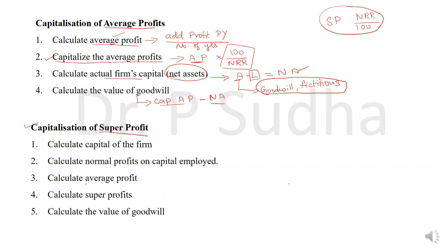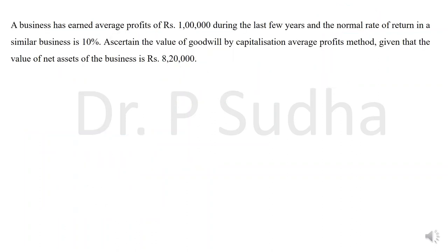Now let us see how to work out this with a problem. A business has earned average profit of rupees 1 lakh during the last few years and the normal rate of return in a similar business is 10%. Ascertain the value of goodwill by capitalization method. The value of net assets of the business is 8 lakh 20,000.